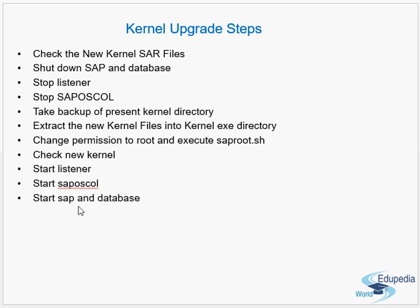In the last video we discussed the Software Update Manager (SUM) tool. The kernel upgrade steps can be covered as part of the SUM tool. When doing an SAP software update, you first upgrade your database and operating system, then upgrade the kernel, and then proceed with your SAP update or upgrade.